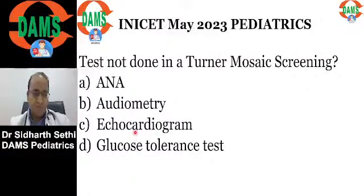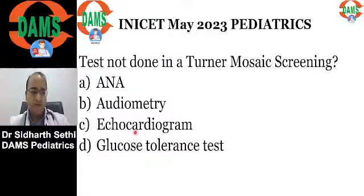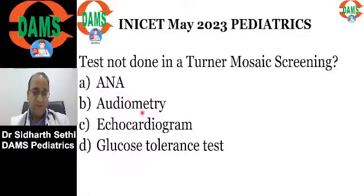Echocardiography should be done in all of these patients because they are at risk of bicuspid aortic valve and coarctation of the aorta. Audiometry should also be done because Turner syndrome patients are at risk of both conductive deafness as well as sensorineural deafness.